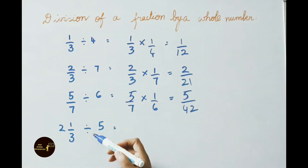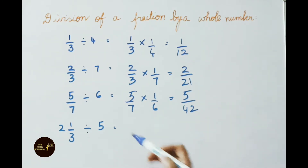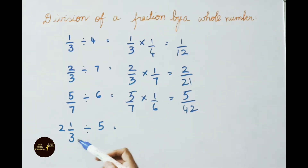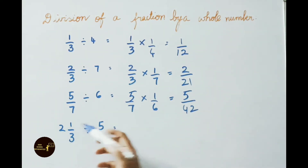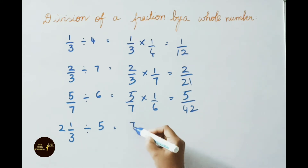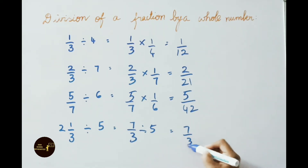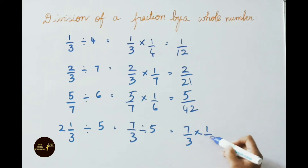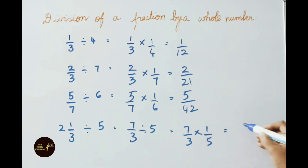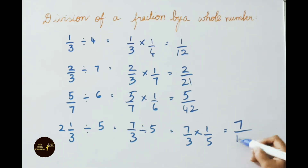See the next sum: 2 and 1/3 divided by 5. Convert 2 and 1/3 to improper fraction. 3 × 2 = 6, 6 + 1 = 7. Write down 7/3 divided by 5. That equals to 7/3 × reciprocal of 5, which is 1/5. Multiply the numerator: 7 × 1 = 7, denominator: 3 × 5 = 15. So the answer is 7/15.